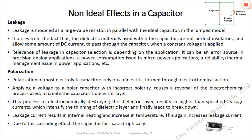Polarization relies on a dielectric form due to electrochemical action. Applying a voltage to a polar capacitor with incorrect polarity causes a reversal of the electrochemical process used to create the capacitor's dielectric layer. This process of electrochemically destroying the dielectric layer results in higher than specified leakage current, which intensifies the thinning of the dielectric layer and finally leads to breakdown.